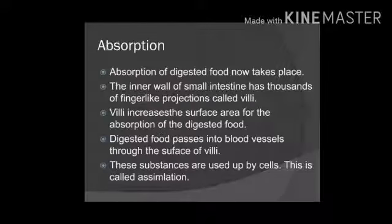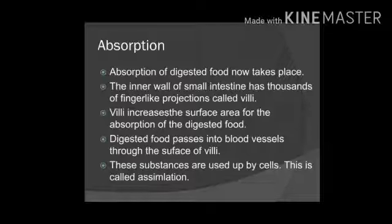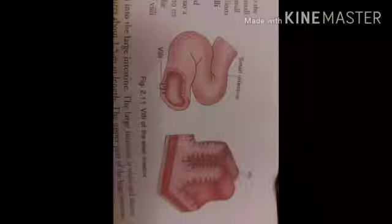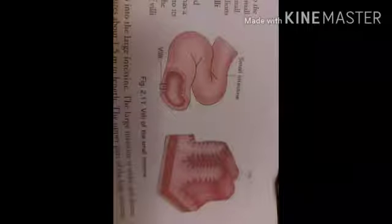The next process is absorption — absorption of digested food. The inner wall of the small intestine has thousands of finger-like projections called villi. The villi increase the surface area for absorption of digested food. Digested food passes into blood vessels through the surface of the villi. These substances are then used up by the cells — this process is known as assimilation. You can see the villi present in the small intestine in the diagram.